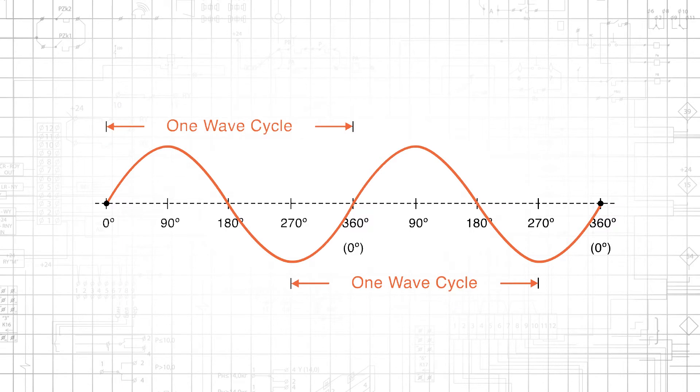Real life sinusoidal signals have amplitudes that vary with respect to time. However, we can also describe the horizontal progression of the signal using degrees, with a full cycle corresponding to 360 degrees and the halfway point at 180 degrees.